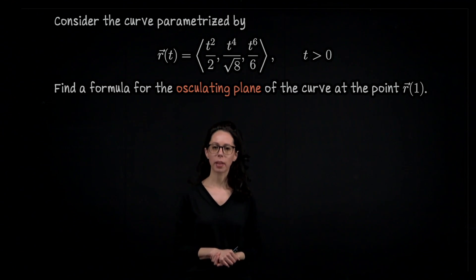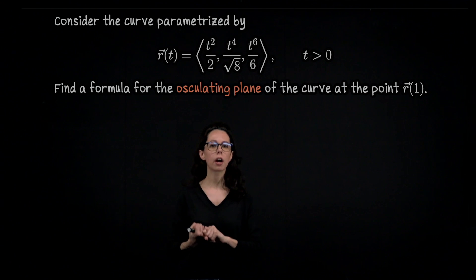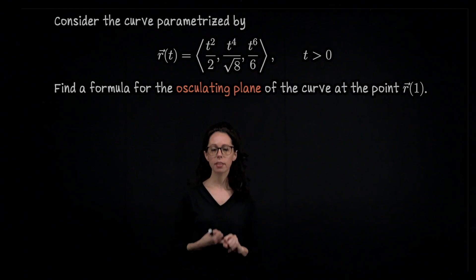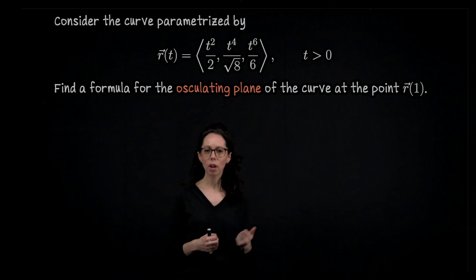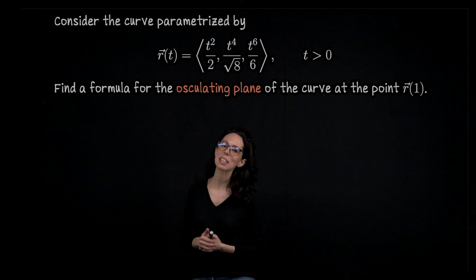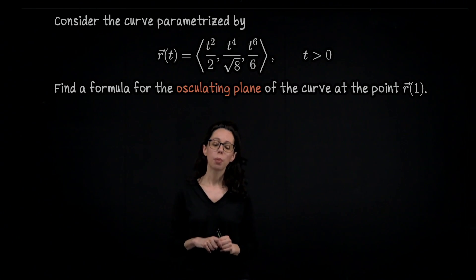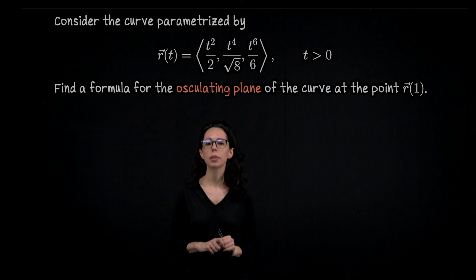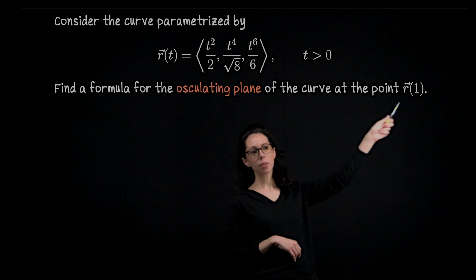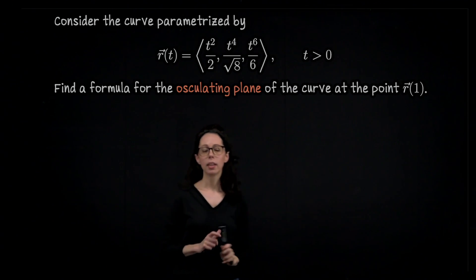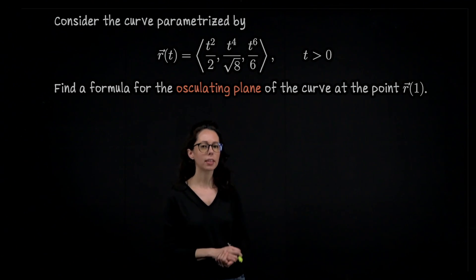In order to get to the osculating plane, we're going to need several pieces of information. We'll need the velocity vector r'(t), the speed (the length of that velocity vector), the tangent vector, the normal vector, and we'll cross those to get the binormal vector, because that's the vector which is perpendicular to this plane.